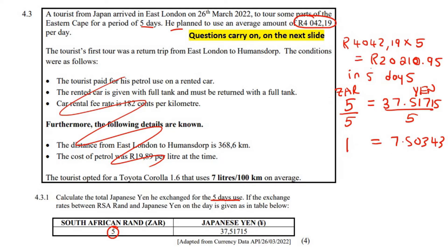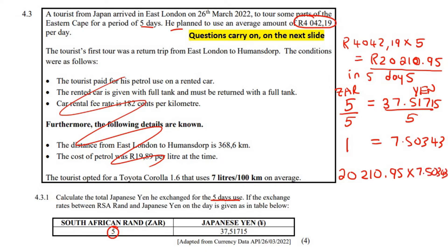So what would happen if you have 20,210 rand? For every one rand you have, that is how many Japanese yen you can get. So you would calculate 20,210.95 multiplied by 7.50343, and this gives 151,651.45 Japanese yen, rounded to two decimal places.